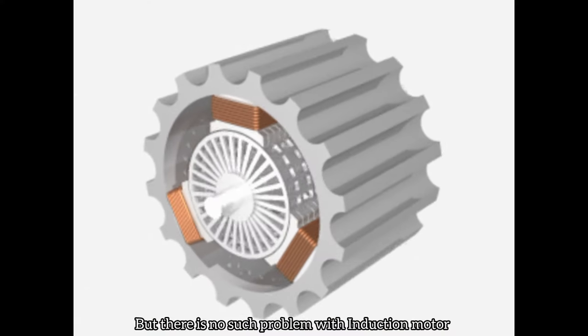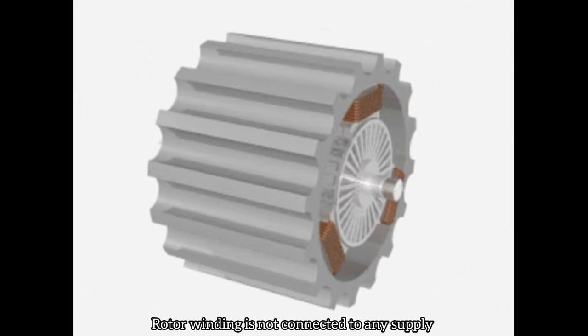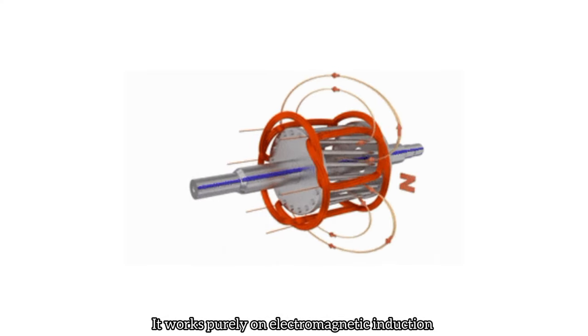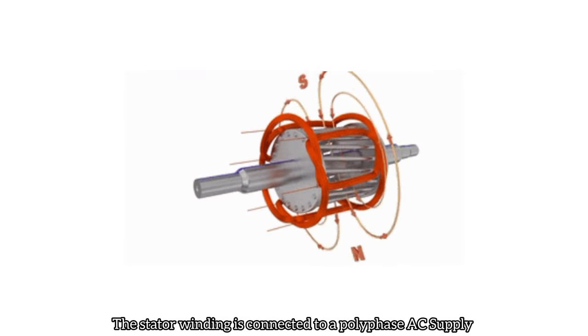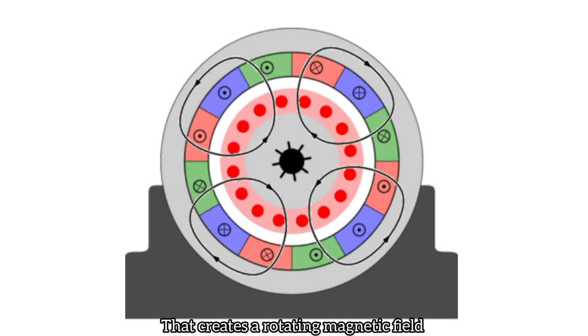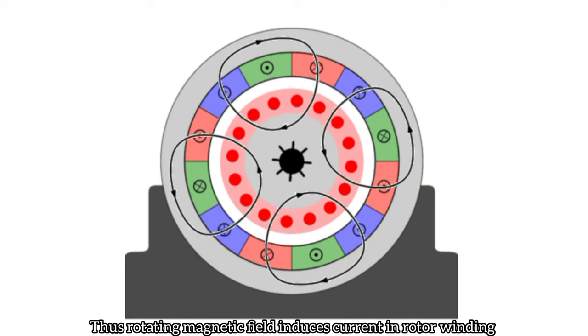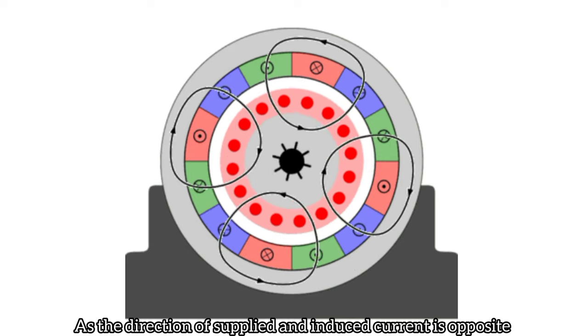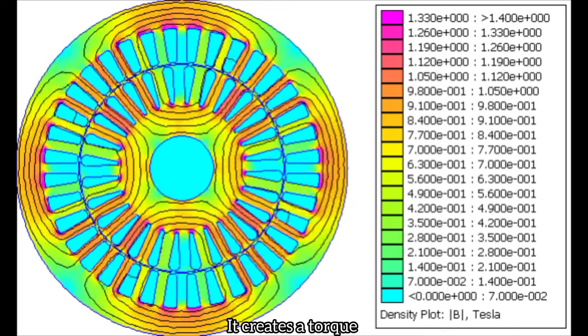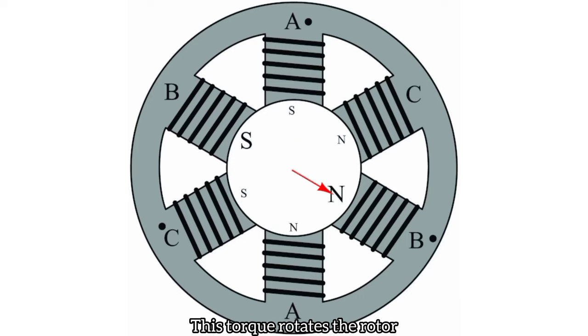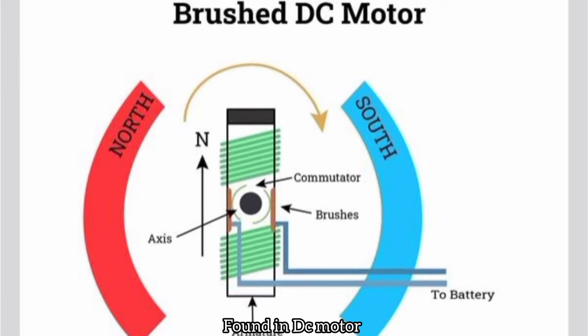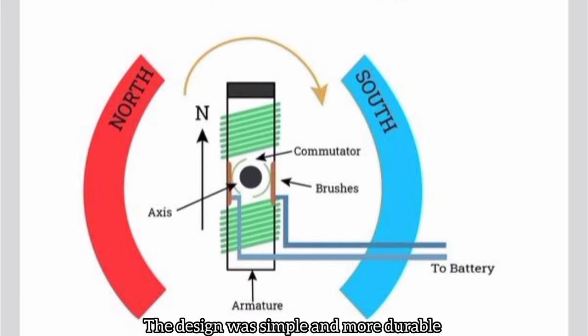But there is no such problem with induction motor. The rotor winding is not connected to any electrical supply. It purely works on the principle of electromagnetic induction. Stator winding is connected to a multi-phase power supply system. It creates a rotating field. This rotating field induces a current in the rotor winding. As the direction of the induced current and the supplied current is opposite to each other, they create a torque and this torque rotates the rotor. It eliminated the need of brushes and commutators found in DC motor. The design was simple and it was more durable.